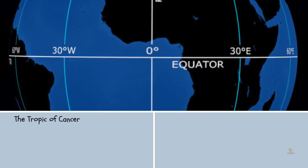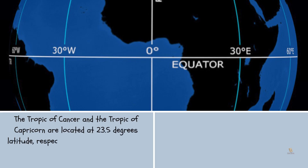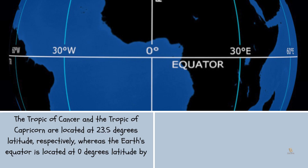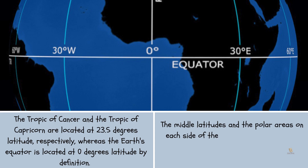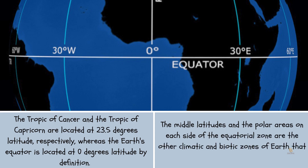The Tropic of Cancer and the Tropic of Capricorn are located at 23.5 degrees latitude, respectively, whereas the Earth's equator is located at 0 degrees latitude by definition. The middle latitudes and the polar areas on each side of the equatorial zone are the other climatic and biotic zones of Earth that are distinguishable from the tropics.